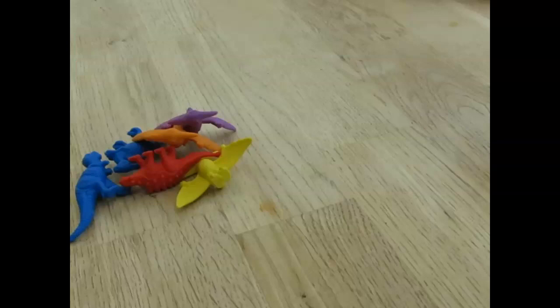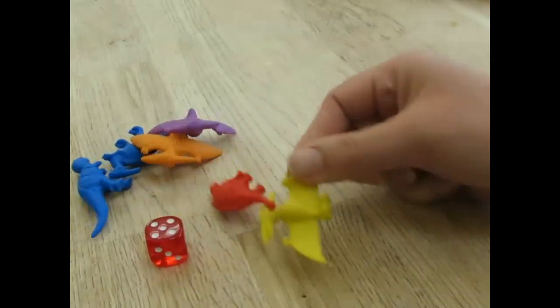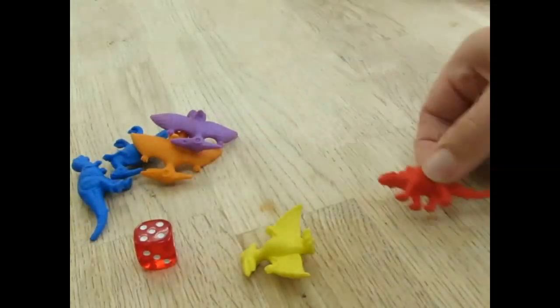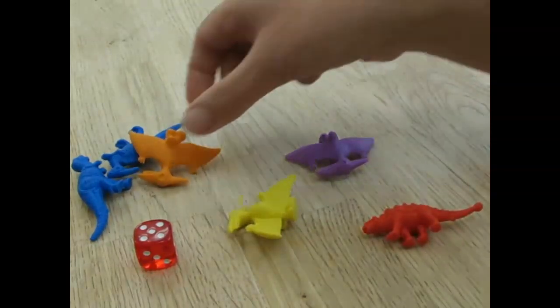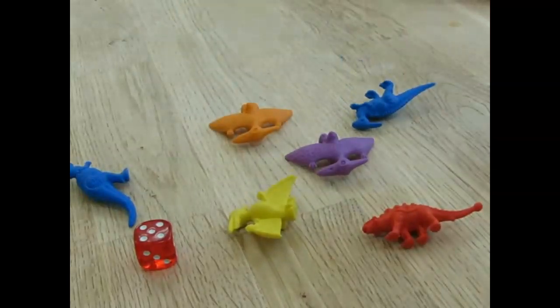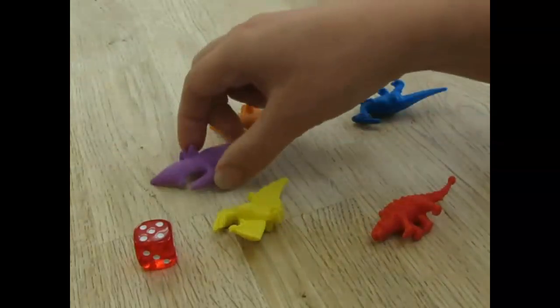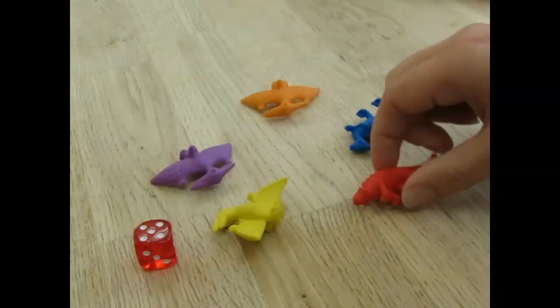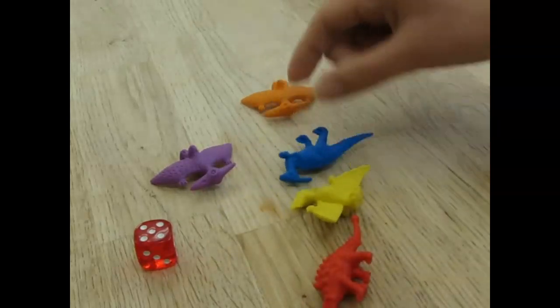Another thing we could do is roll the dice again and create that number using our toys. So I've got five here. I could copy it. I could then rearrange them and just check have I still got five, so I could put them into a circle. I could put them into a line. I still have five.